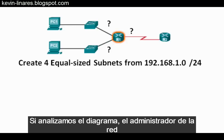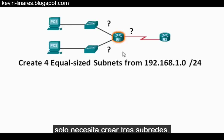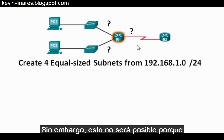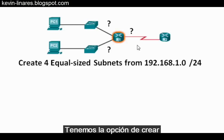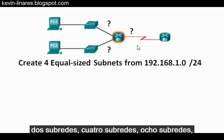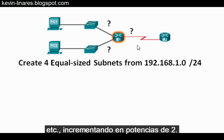If you look at the diagram, the network administrator actually only needs to create three subnetworks. However, this will not be possible because subnets are created in powers of two, so we have the options of creating two subnets, four subnets, eight subnets, and so on.